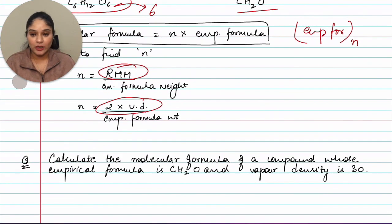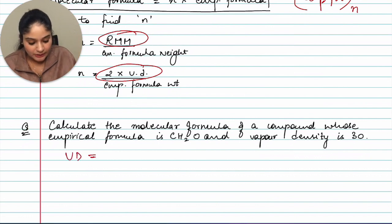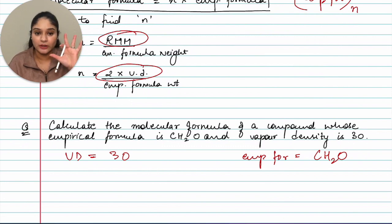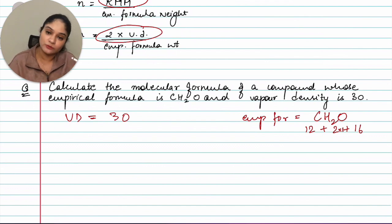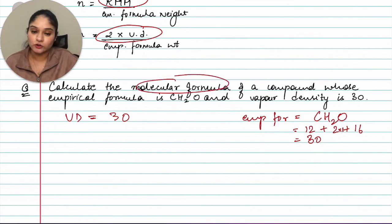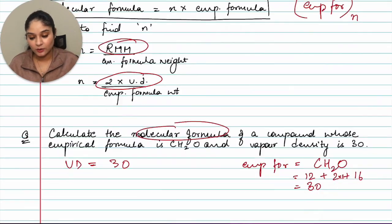Question: calculate the molecular formula of a compound whose empirical formula is CH₂O and vapor density is 30. First, find the empirical formula weight: C = 12, H₂ = 2×1 = 2, O = 16; total = 30. Now use: n = (2 × vapor density) ÷ empirical formula weight = (2 × 30) ÷ 30 = 2.